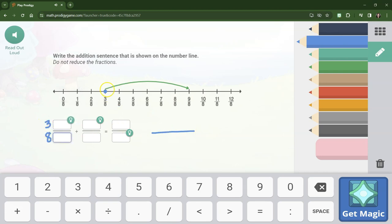We start with 3 eighths. We jump 1, 2, 3, 4, 5, 6 eighths. So because our denominators are the same, let's make that a 6. All we need to do is add across. We've got 3 and 6 for our numerator and our denominators just stay 8.